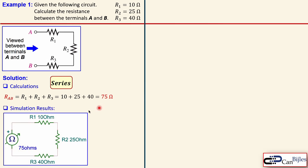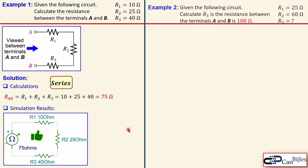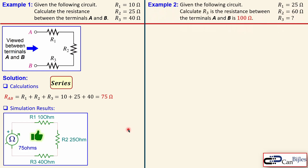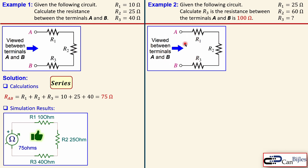Let's look at the simulation results. This is the circuit drawn in the SPICE simulator with the ohmmeter measuring the resistance. You can see the resistors from the example, and indeed we have 75 ohms as calculated — so this is verified.